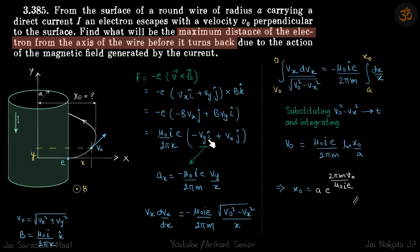From this term, let's take the fx term. This will be m into ax. So ax equals this force divided by m, which becomes minus mu0 i e by 2 pi m times vy by x.